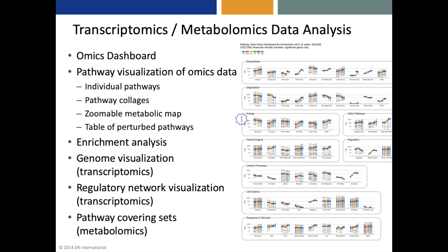The transcriptomics and metabolomics data analysis tools include a tool called the omics dashboard, shown here at the right. There is the ability to visualize omics data onto individual pathways and personalized multi-pathway diagrams, as well as on the zoomable metabolic map. We have enrichment analysis of both transcriptomics and metabolomics data, as well as genome visualization of transcriptomics data, regulatory network visualization of transcriptomics data, and the ability to compute pathway covering sets for metabolomics data.